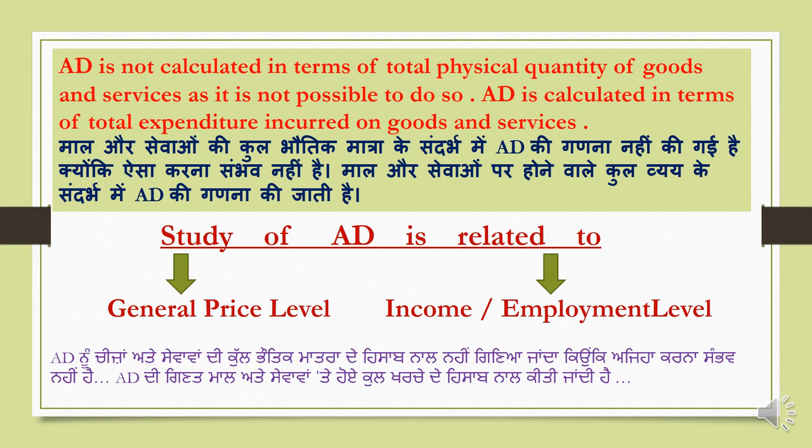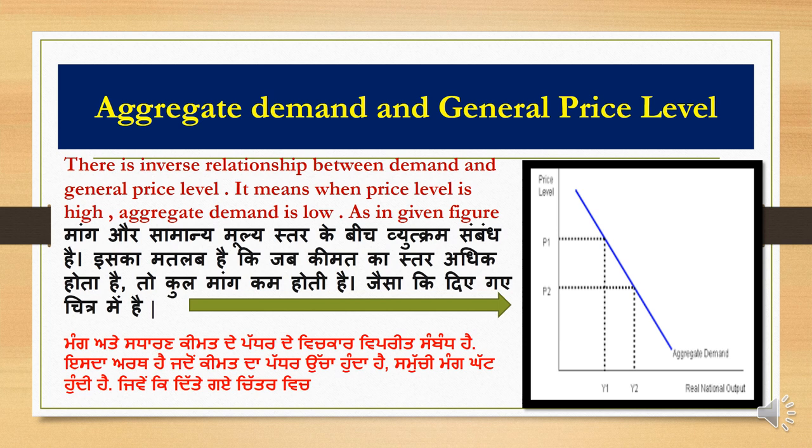The study of aggregate demand is related to two different aspects. Aggregate demand is related to the general price level, and also related with the income or employment level. We will discuss both concepts one by one. First, we discuss aggregate demand and general price level.